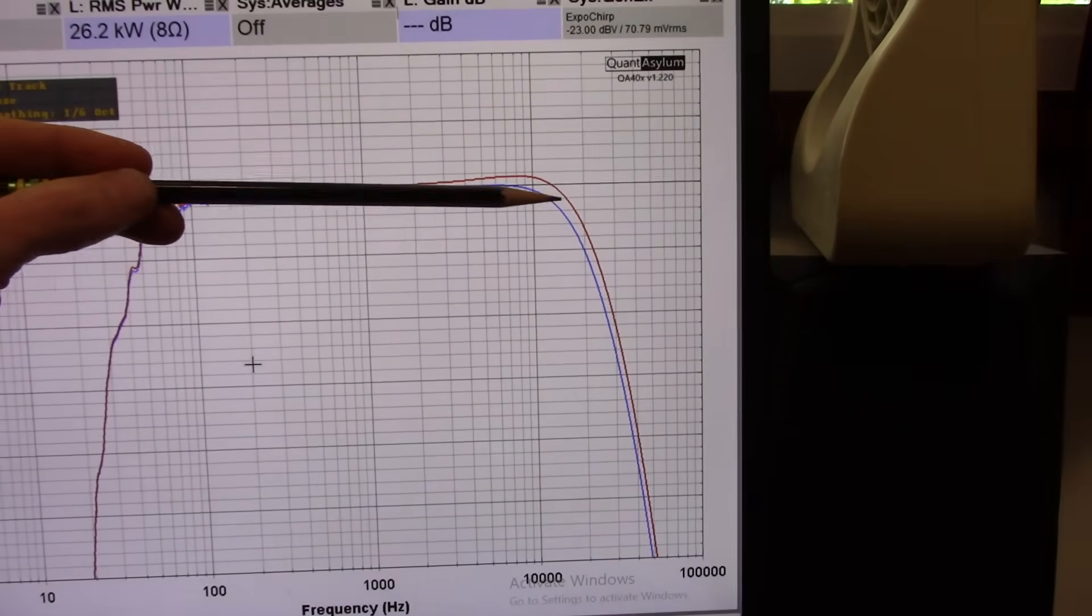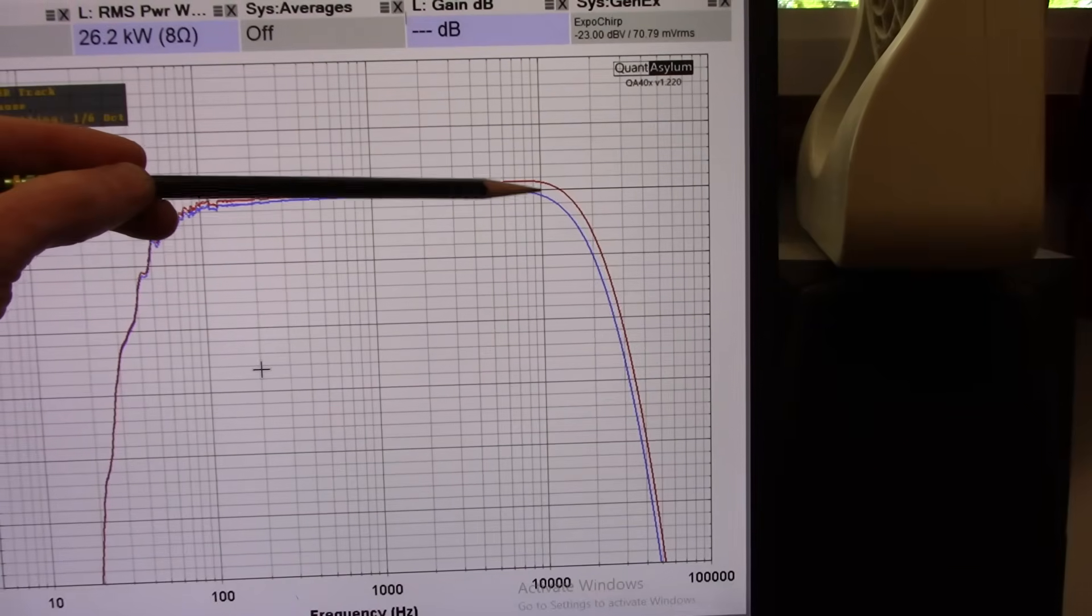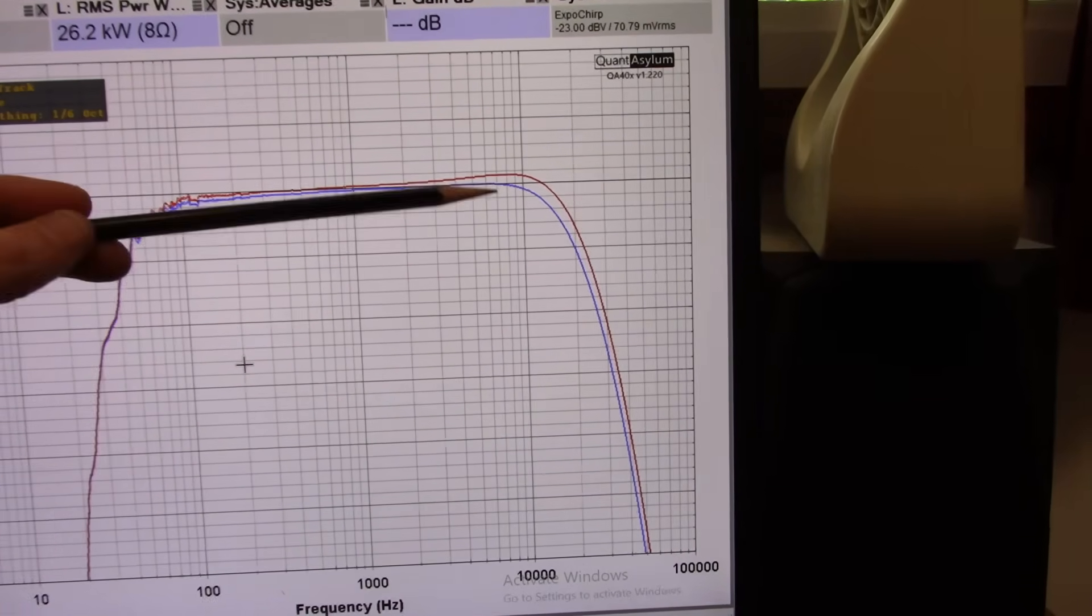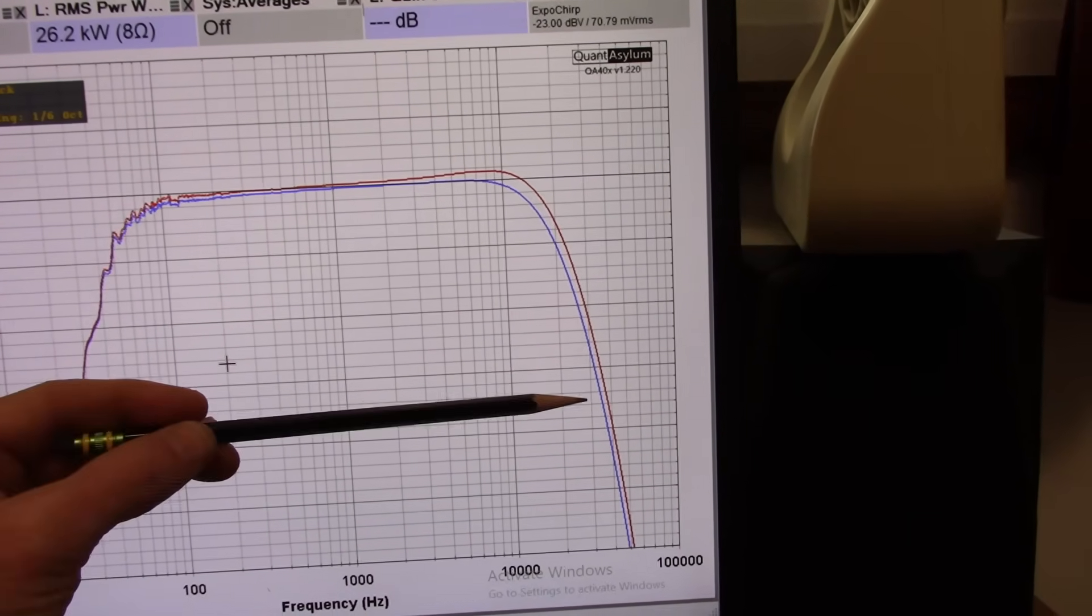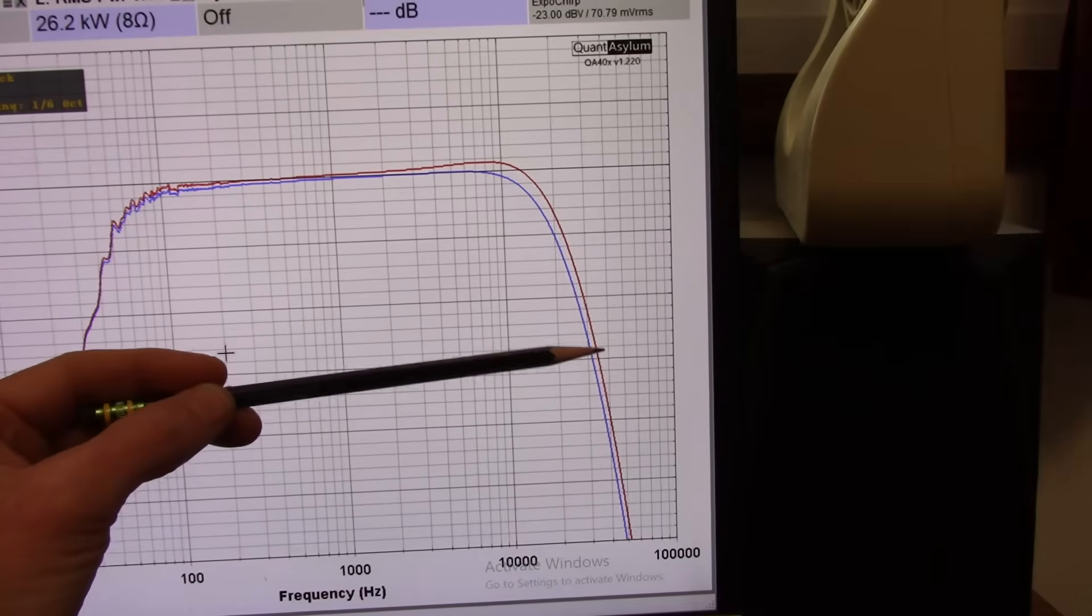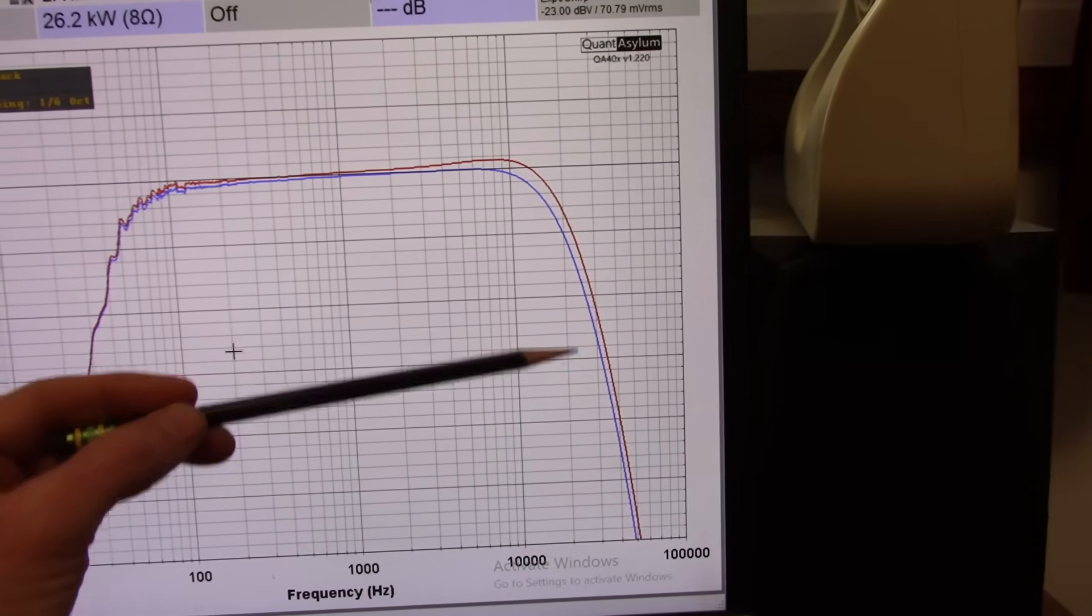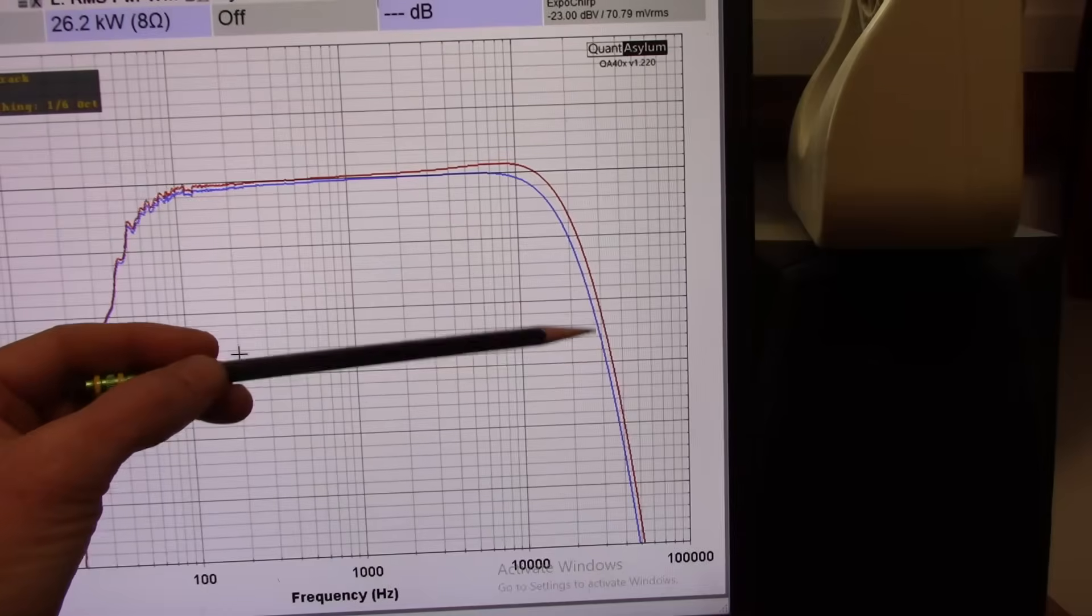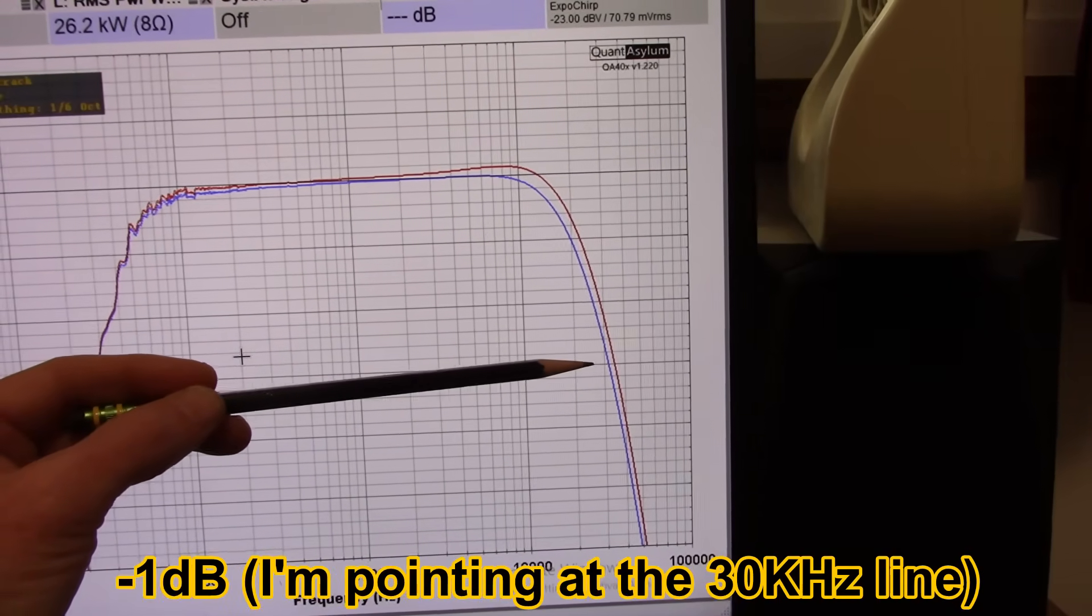On the high end, you see there's a widening of difference between the channel. About half a dB down here. And at 20 kilohertz we're about, I don't know, 2.5 depending on the channel you're looking at, but 2.5 dB down.